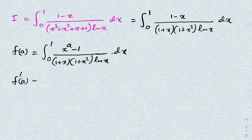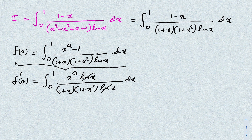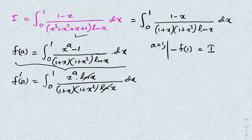We differentiate with respect to a, so f'(a) equals the integral from 0 to 1 of x^a times ln(x) over (1 + x)(1 + x²) times ln(x) dx. The ln(x) terms cancel. Now if we plug in a = 1, we get f(1) equal to the integral of (x − 1) over the same denominator, so f(1) = −I, meaning our integral I equals −f(1).